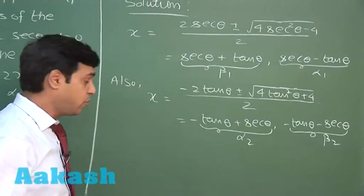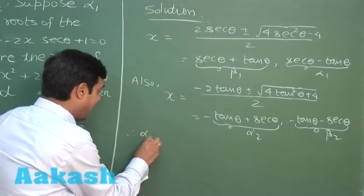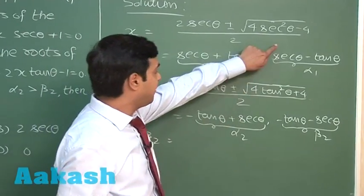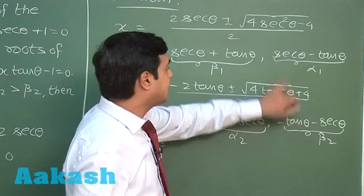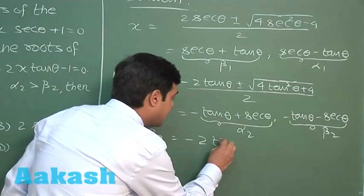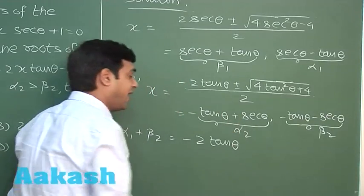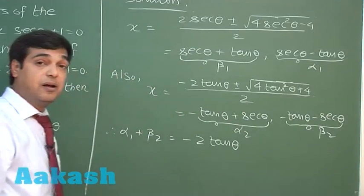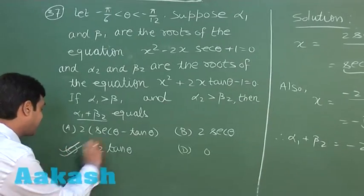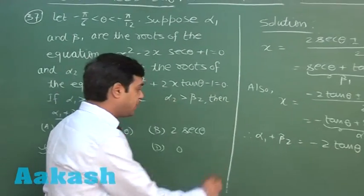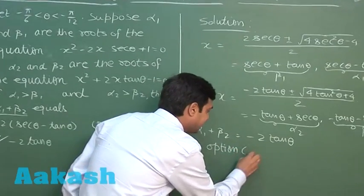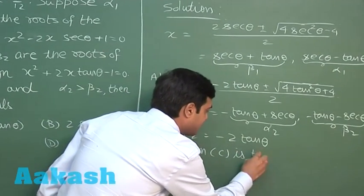The question asks for alpha 1 plus beta 2. Adding alpha 1 (which is secθ + tanθ) and beta 2 (which is −tanθ − secθ), we see that secθ cancels, and the answer is minus 2·tanθ. From the given options, option C is correct.